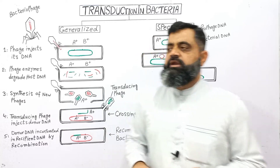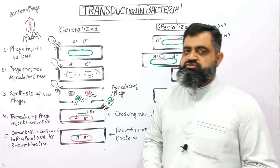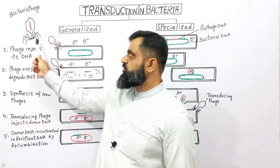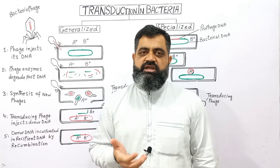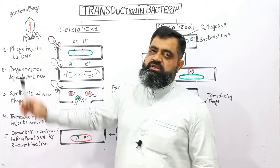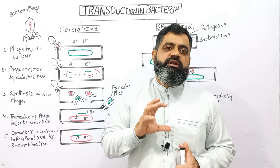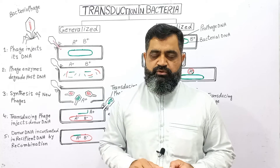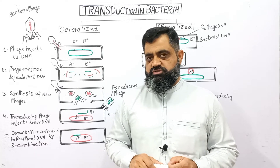I have already made a diagram for you. To discuss the process of transduction, first of all we have to look at the structure of a bacteriophage or phage virus. This phage virus has different types like T2 and T4 phages. They have a protein capsid and also contain DNA as a genetic material. Only those bacteriophages which have DNA are usually involved in the process of transduction. Usually RNA viruses do not participate in the process of transduction.